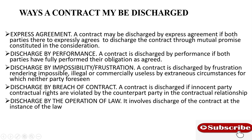Discharge by impossibility or frustration. A contract is discharged by frustration if it is regarded as impossible, illegal, or commercially useless due to extraneous circumstances which neither party had foreseen. A contract may also be discharged by impossibility if it is based on an impossible contractual agreement which cannot happen.